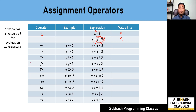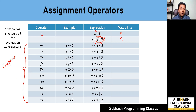So let us see the other kinds of assignment operators. The other kind of assignment operators are called compound operators. There are 10 compound operators: plus equal-to, minus equal-to, star equal-to, division equal-to, modulo equal-to, left shift equal-to, right shift equal-to, bitwise AND equal-to, bitwise OR equal-to, and bitwise XOR equal-to. Let us discuss each one by one.